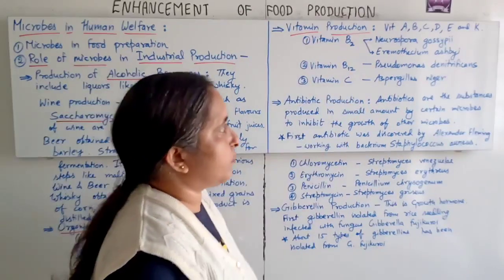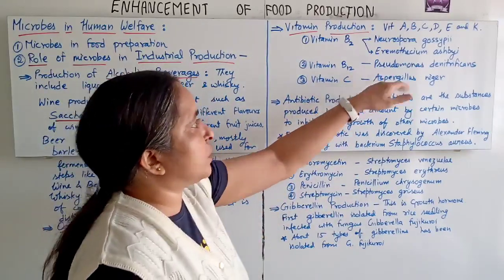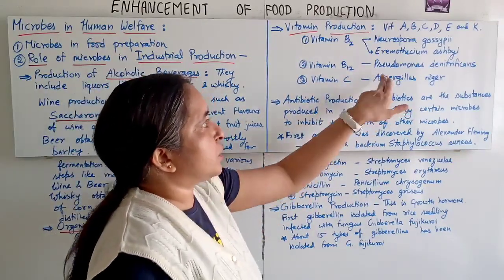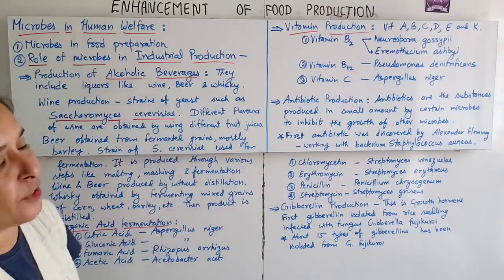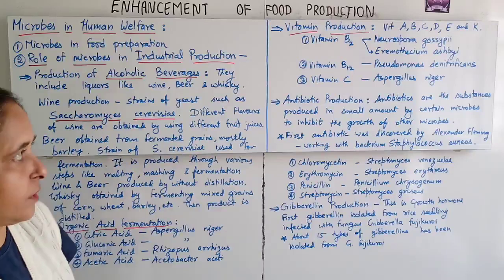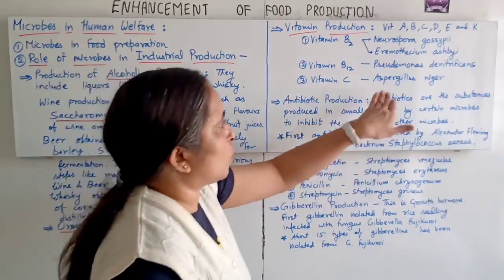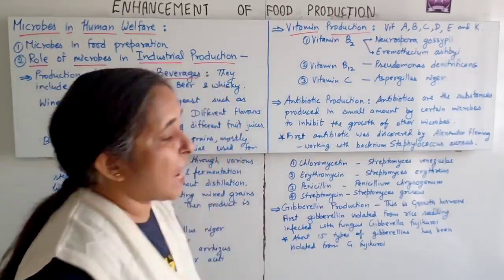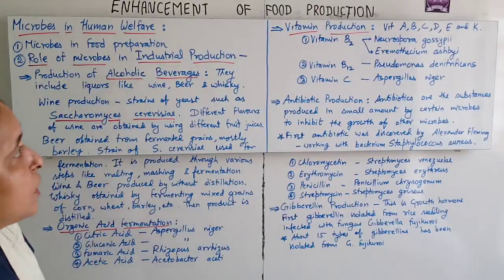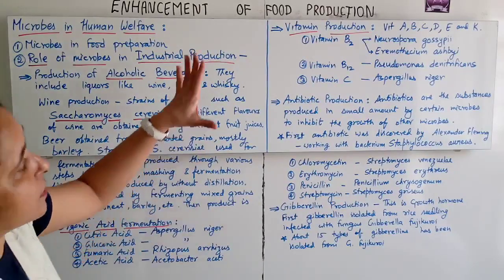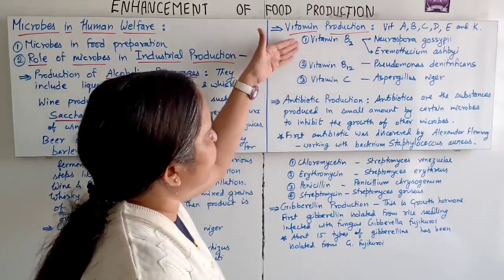Vitamin B12 is sourced from Pseudomonas denitrificans. Vitamin C is produced with the help of Aspergillus niger. These are the examples of vitamin production by microbial sources.